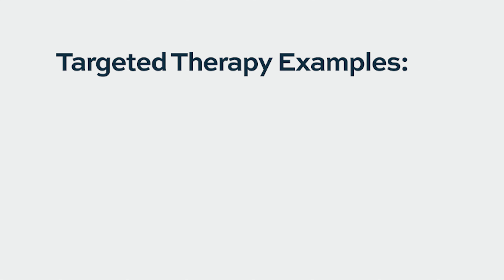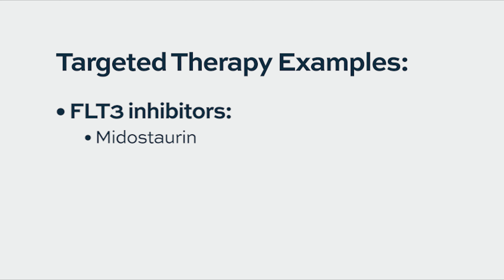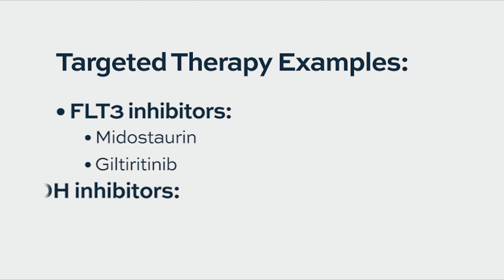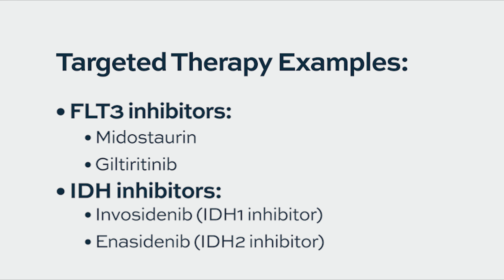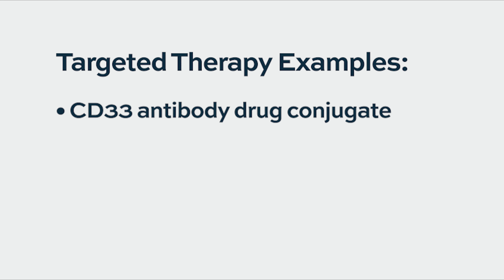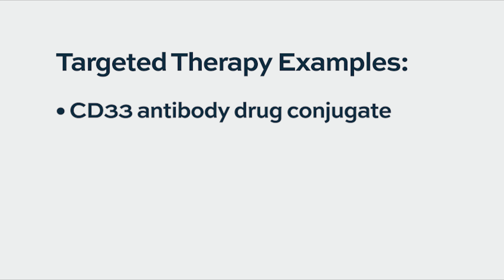Examples of this are FLT3 inhibitors, which target FLT3 mutated cells in acute myeloid leukemia and can be more potent than conventional chemotherapy, and IDH inhibitors that block IDH mutated cells.